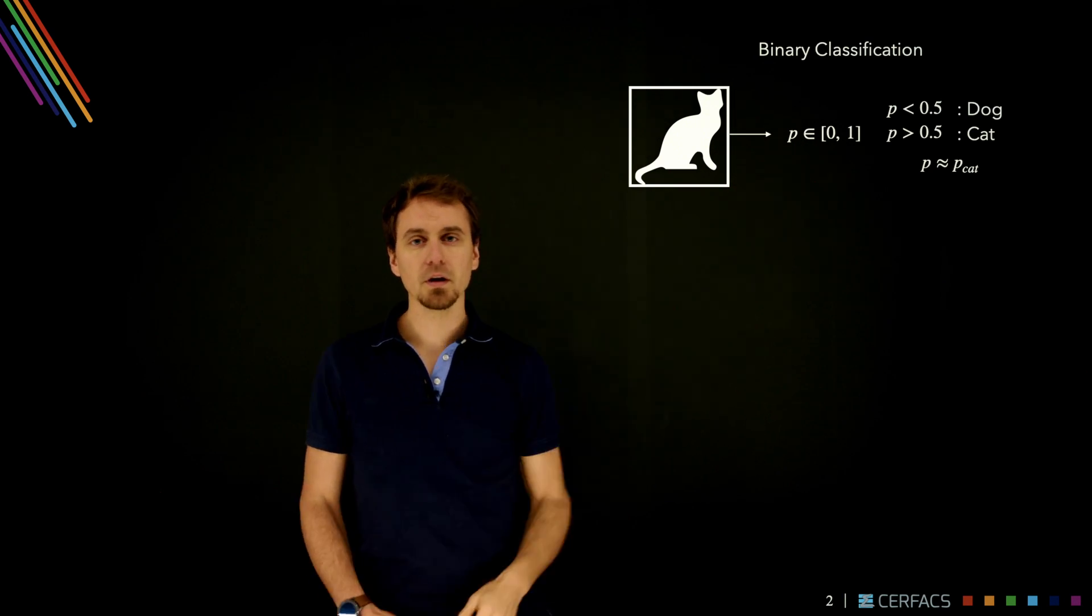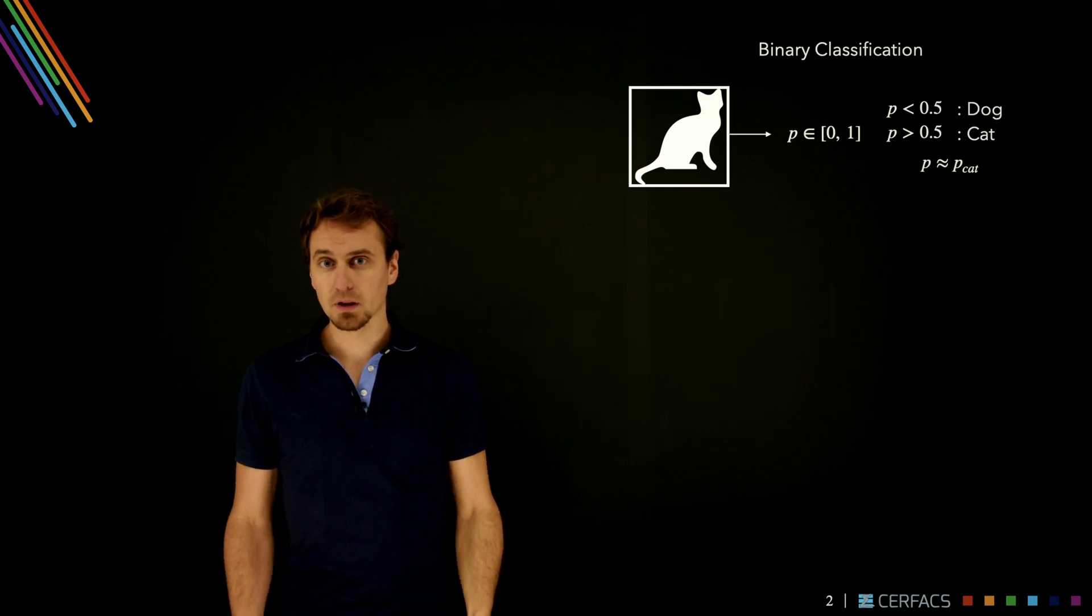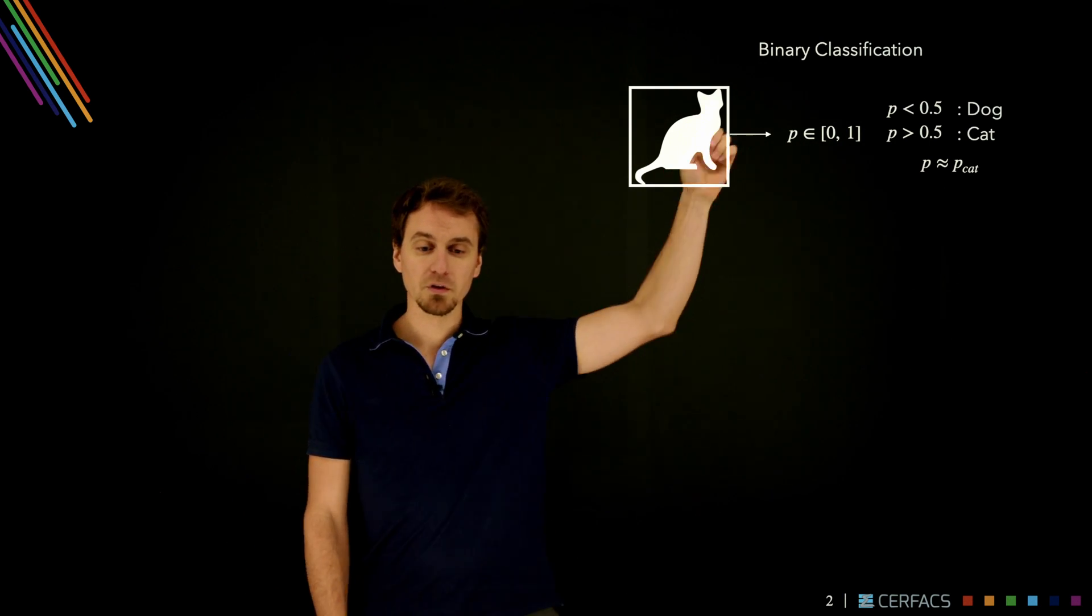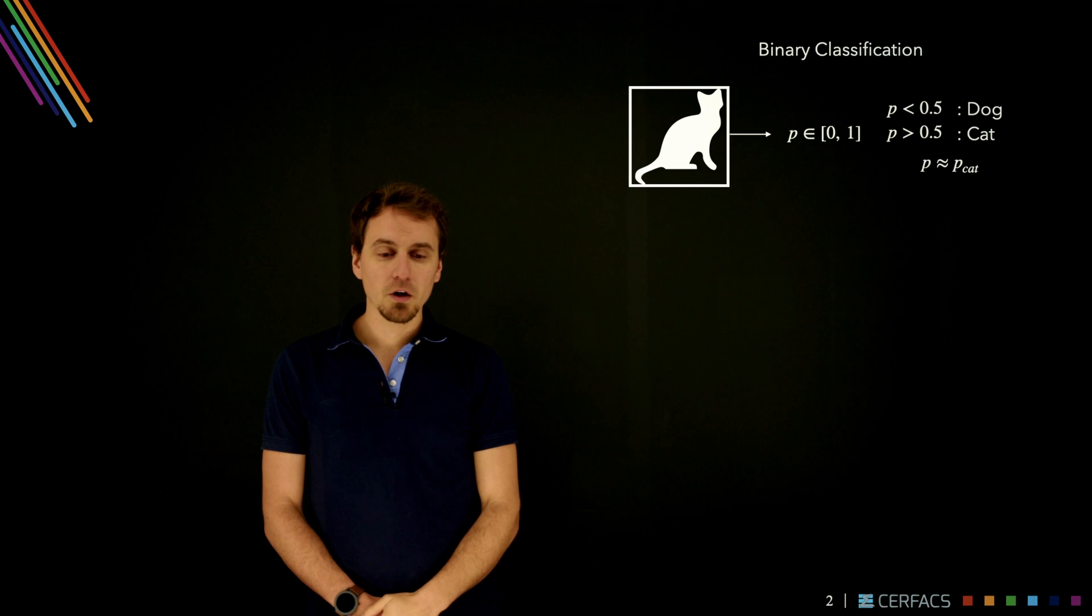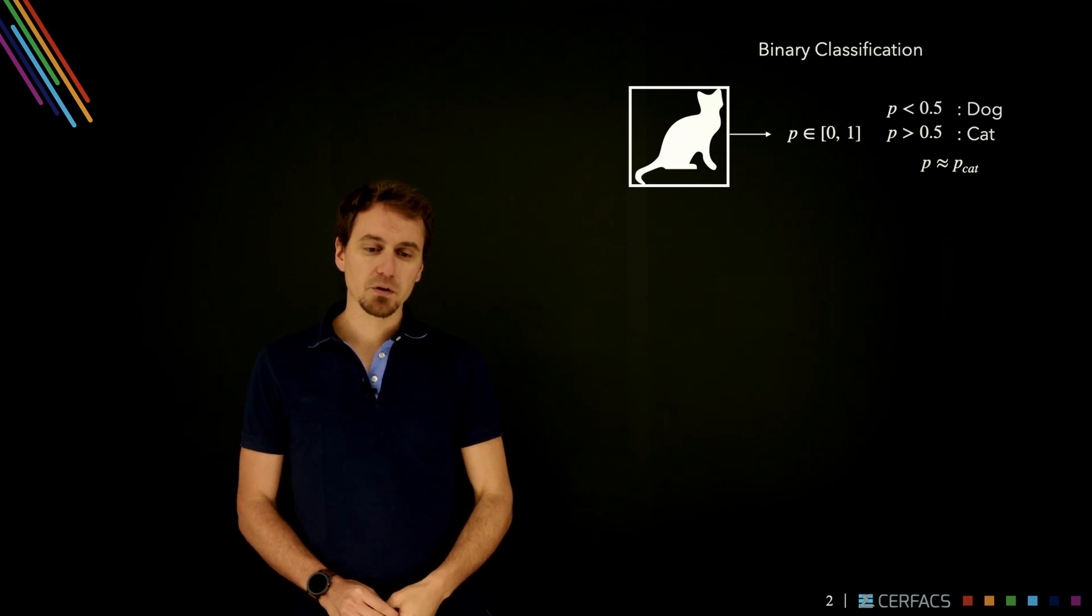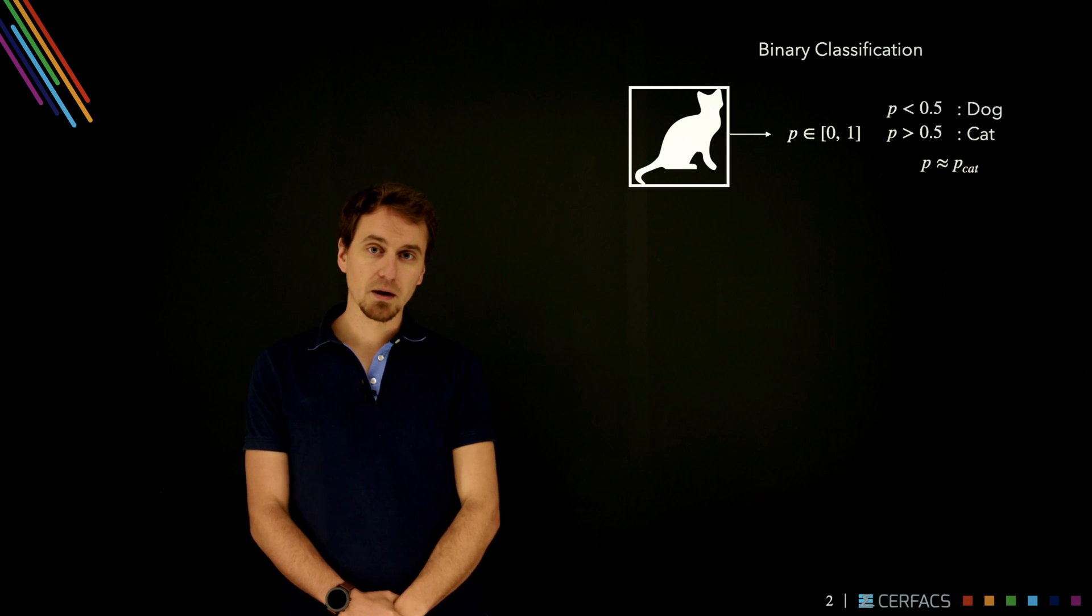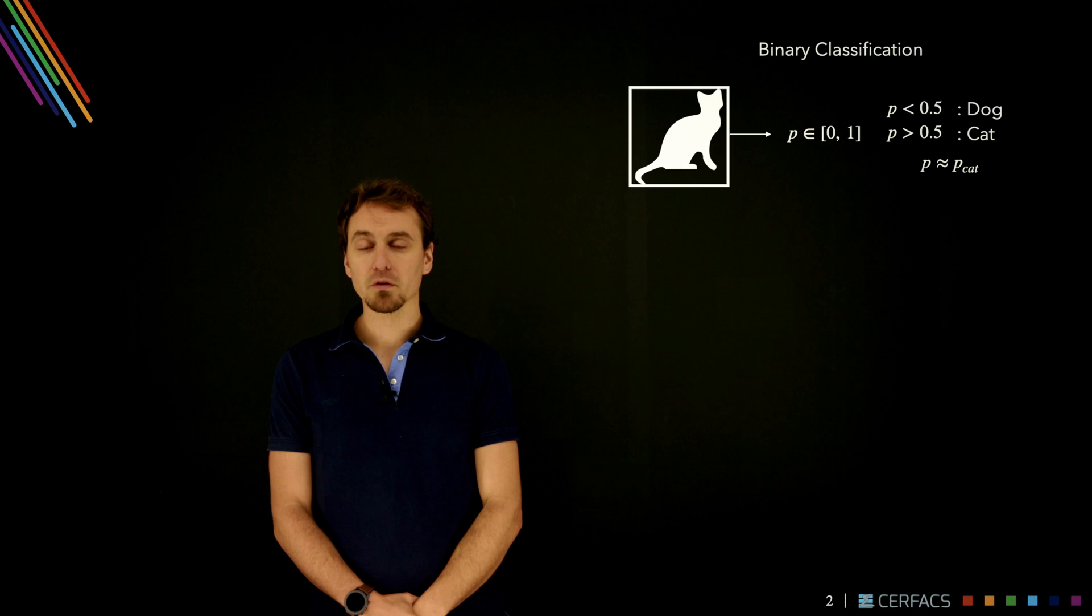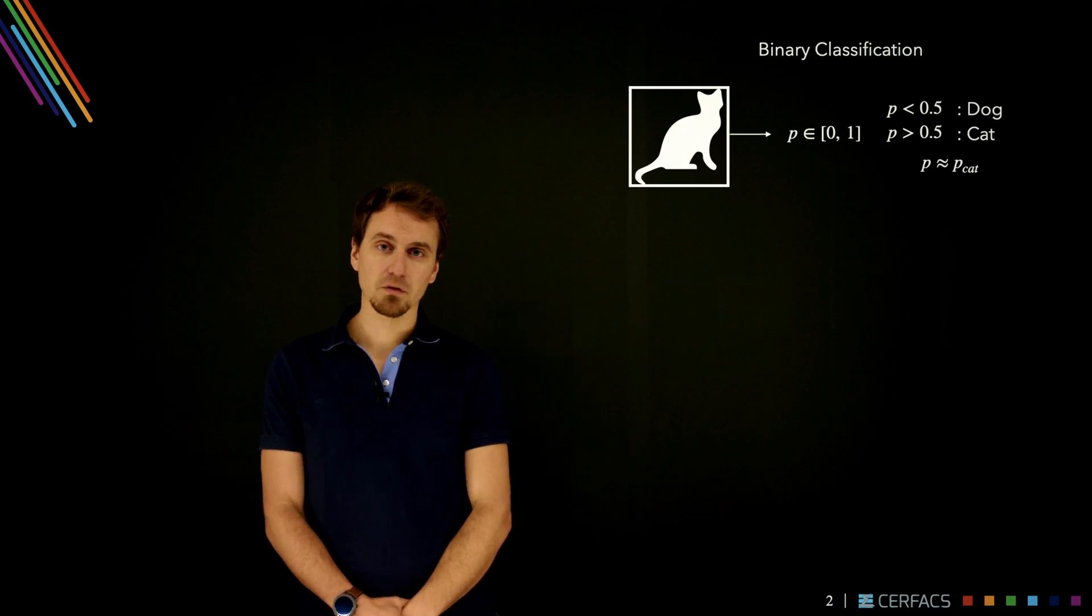You associate to it a probability of it being one of a class, possibly one of two classes in the most basic form, which is binary classification. So the prototypical example is dog and cat, and we could say that if the p output is less than 0.5 then it is a dog, and if p is above 0.5 then the image is actually of the cat category.